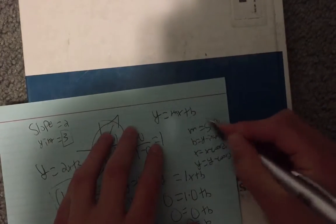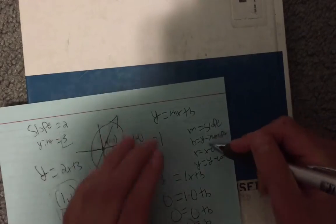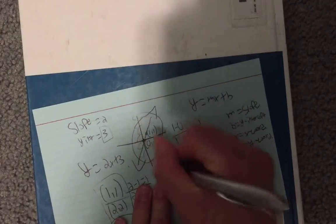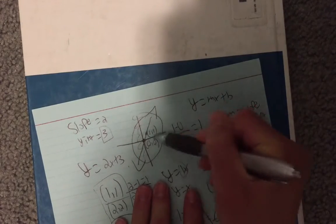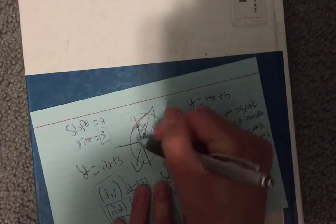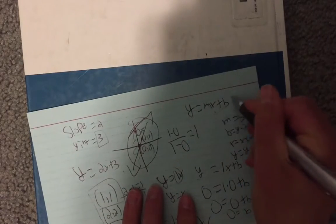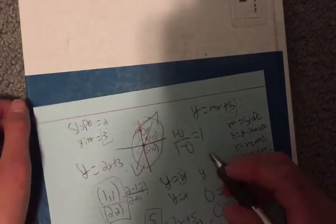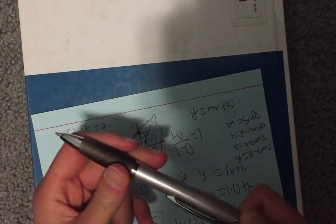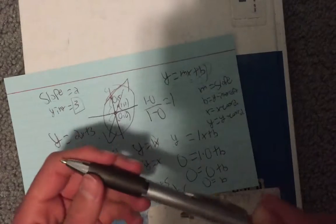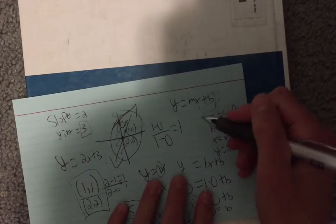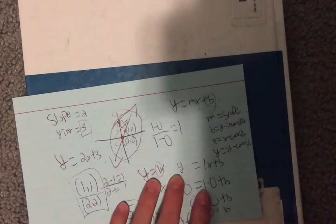Whereas m equals the slope, b equals the y-intercept. So the y-intercept means that it crosses this y-axis right here at a point. So for example, if we went right here and this point was 0,5, it passed it at 5. So really what it is, it's just when x equals 0. So if you wanted to find the y-intercept, all you have to do is plug 0 in for x, and you'll automatically find what your y-intercept is.